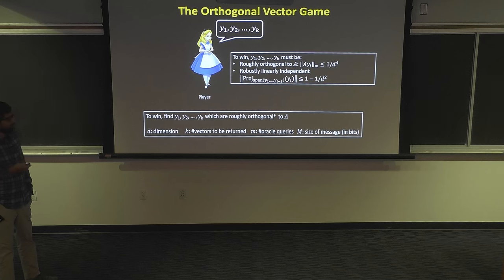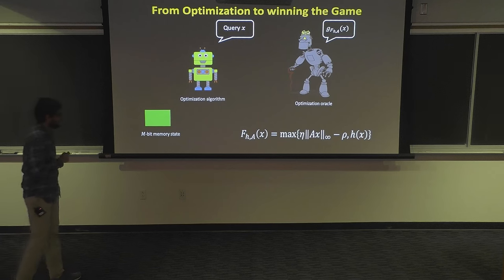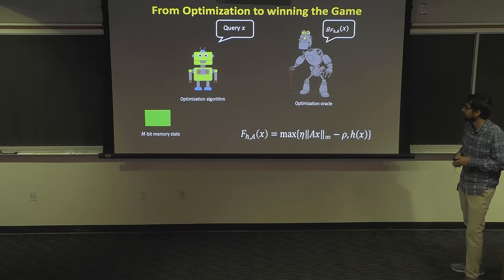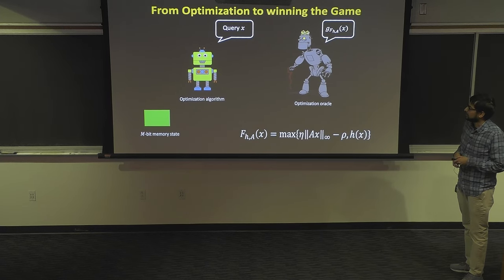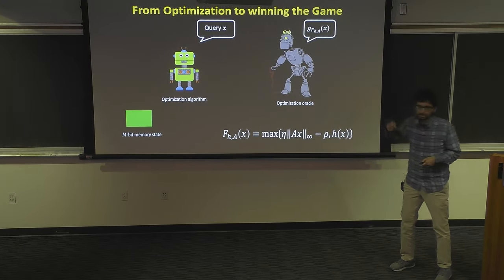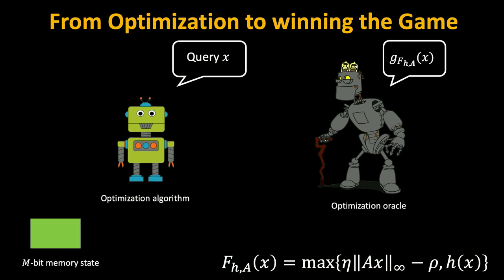That's the game. We relate winning this game to optimizing the hard function class. We want to show that any successful algorithm for minimizing this class of functions can be used to win the game. In the communication game, Alice cannot update M — M is something she writes at the start, and there's no memory restriction after this initial compression.